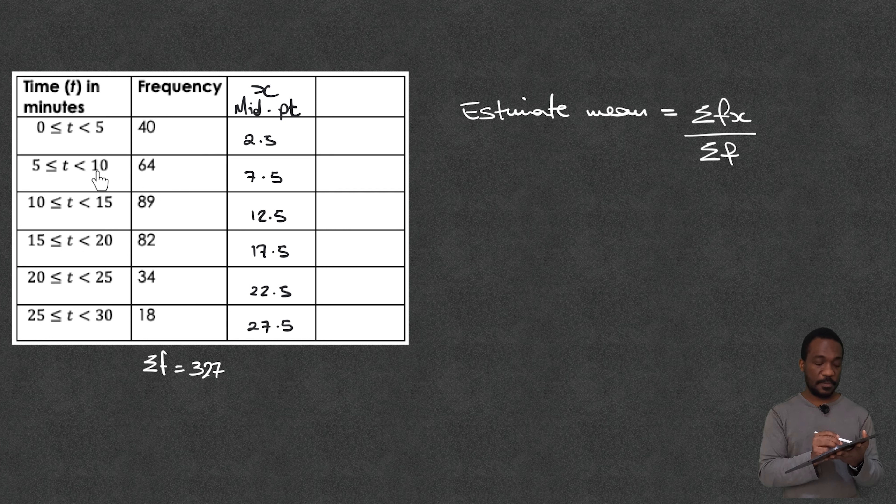So 5 plus 10 is 15. Half of 15 is 7.5. So if you didn't know how to do it that's a nice quick way of getting it sorted.